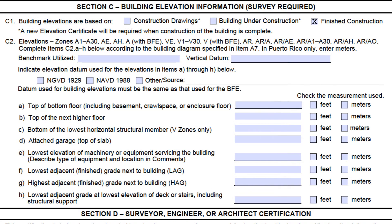Let's start with the first elevation. C2A is always required — on every EC, every building has a lowest floor, so be sure there's always something there.